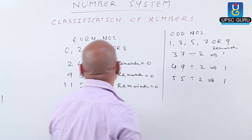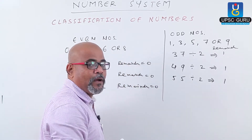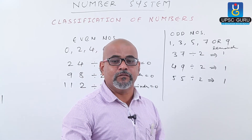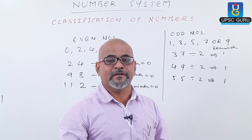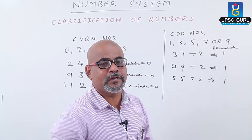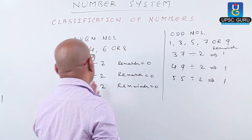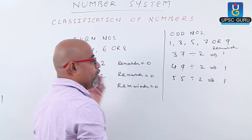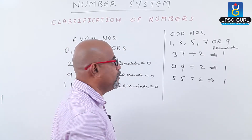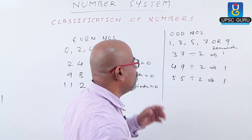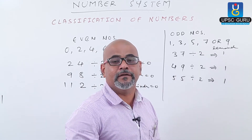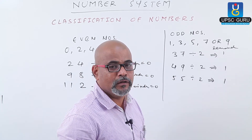When we divide an even number by 2, we get remainder equals to 0. And when we divide an odd number by 2, remainder is always 1. So even numbers are those which when divided by 2 give remainder 0, and odd numbers give remainder 1.